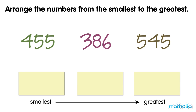Arrange the numbers from the smallest to the greatest. Let's start by comparing the digits in the hundreds place of each number: four, three, and five. Three is smaller than four and five. So, three hundred and eighty-six is the smallest number.